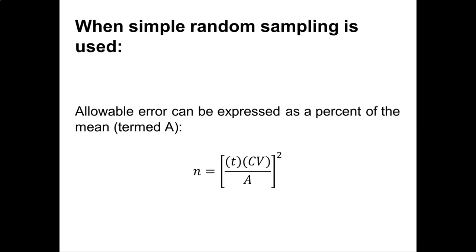We want to know N, how many samples to collect. We need to know T. T is the value from a T table or from software. We need to know the coefficient of variation, or CV, and we express that in percent. And then we need to know the allowable error, which we also express as a percent.